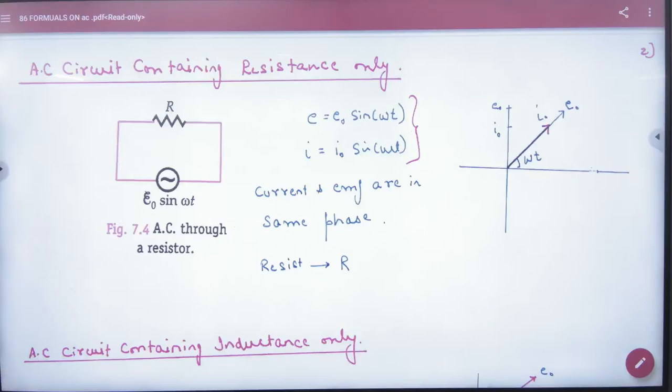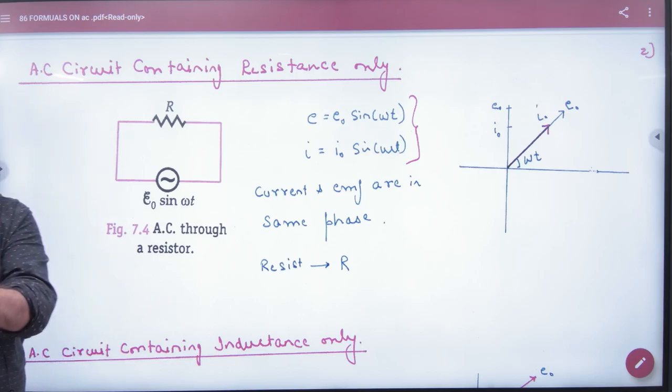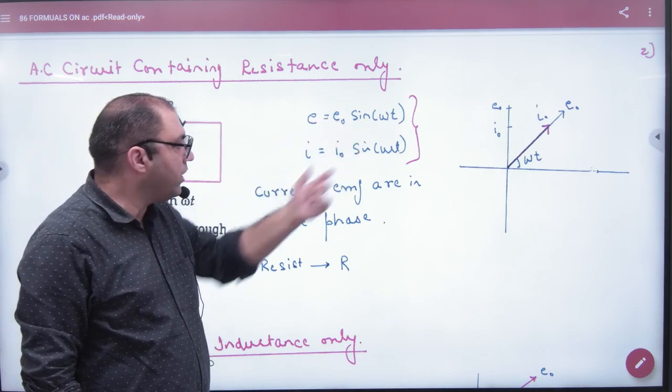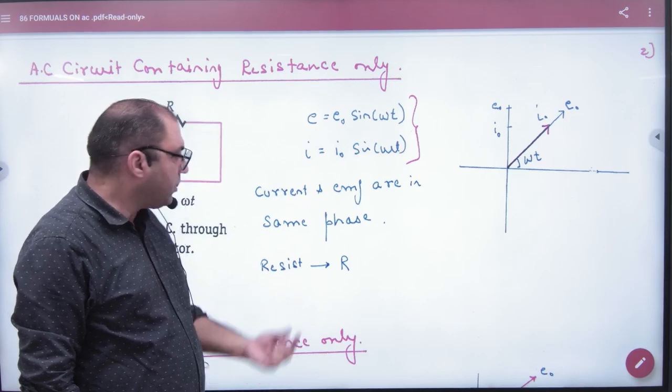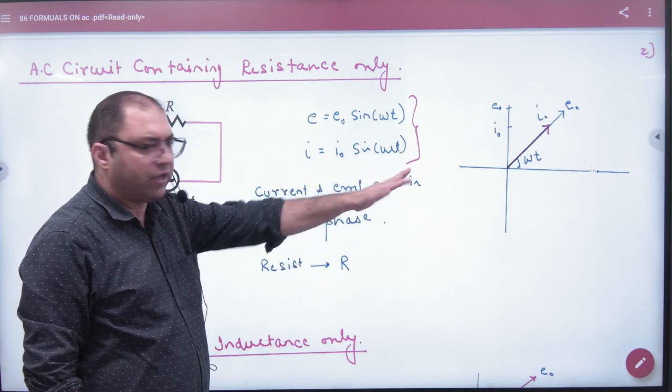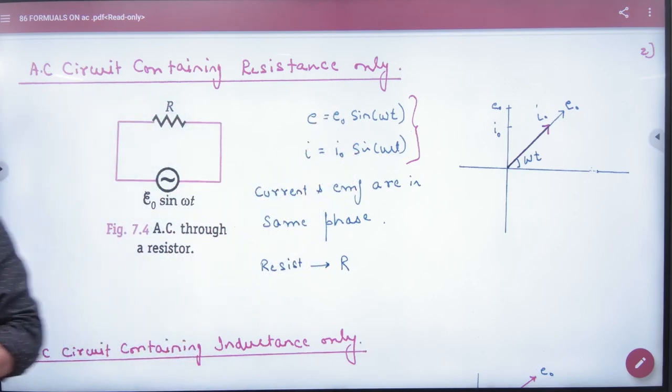So what have we done? AC circuit containing resistance only. Now we write the topic on the formula booklet: AC circuit containing resistance only, in which you write EMF E0 sin omega t, current I0 sin omega t. What do we represent it? R. What do we draw from the phasor? Just these two values and R. So current and voltage are in the same phase in case of a resistor.